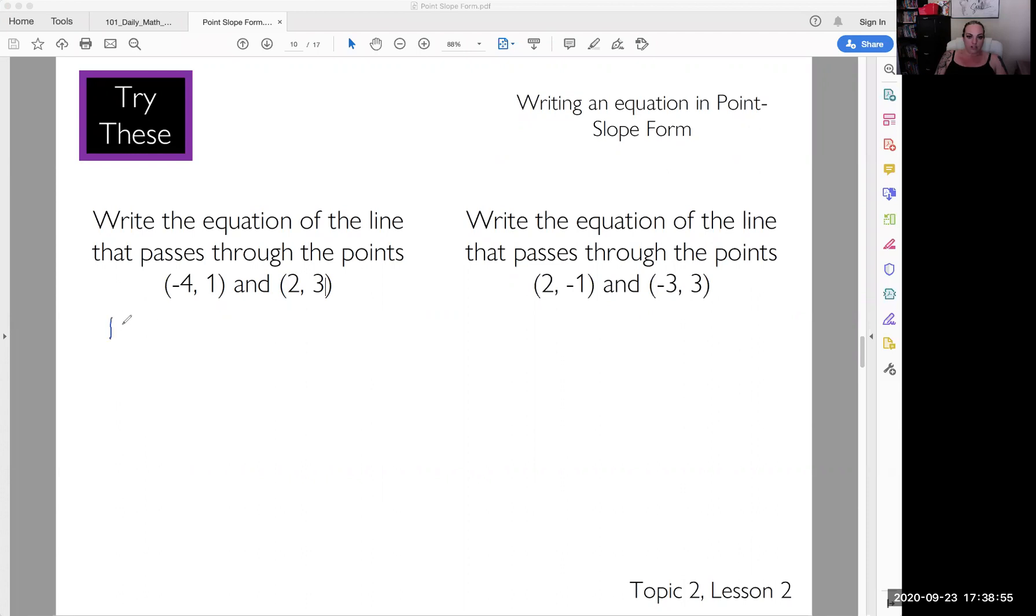So remember, slope is the change, y2 minus y1, this one minus this one, divided by x2 minus x1, this one minus that one. So let's plug these in, 3 minus 1 over 2 minus negative 4. That minus still applies, so you have to put the negative 4 separately. This is the same as 2 over 2 plus 4 is 6, which gives us a slope of 1 third when we simplify it.